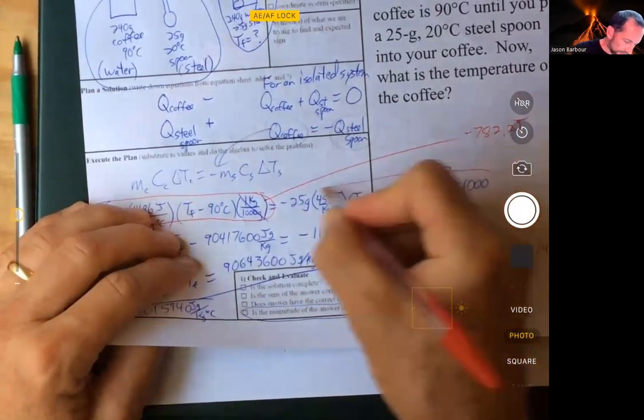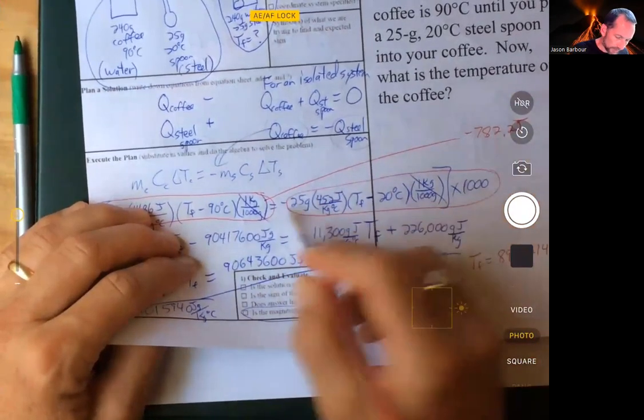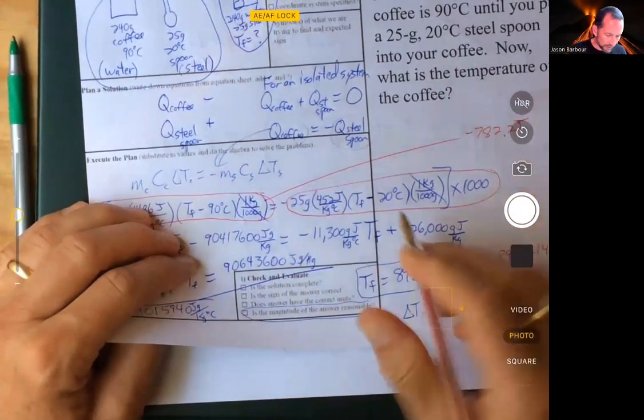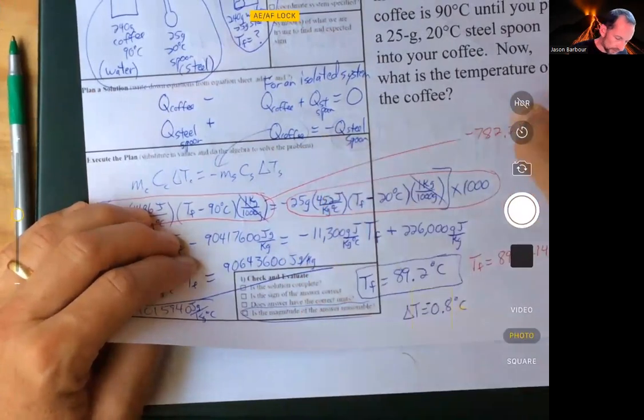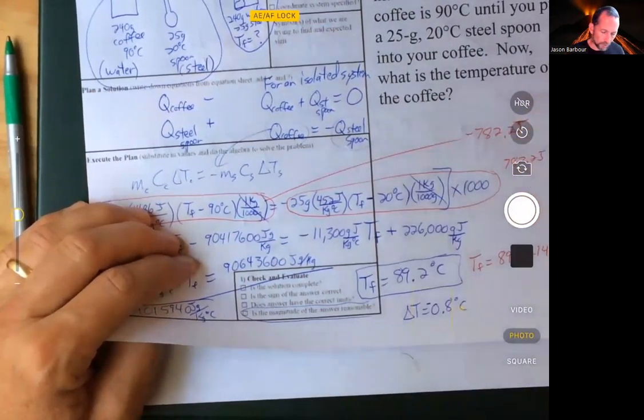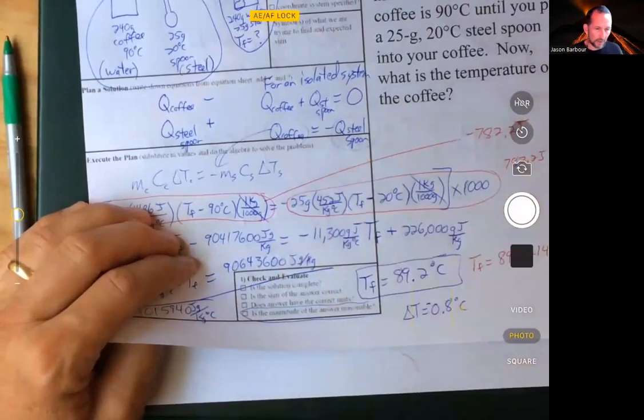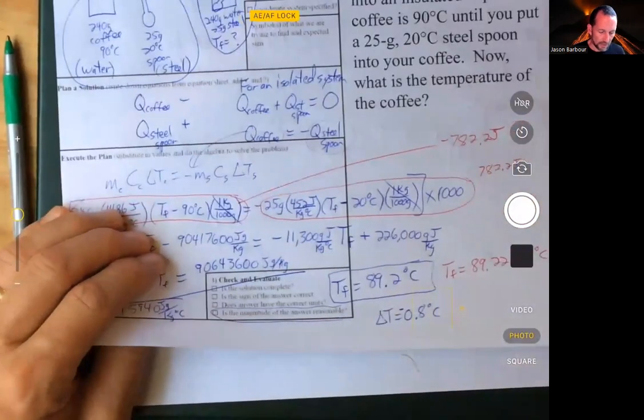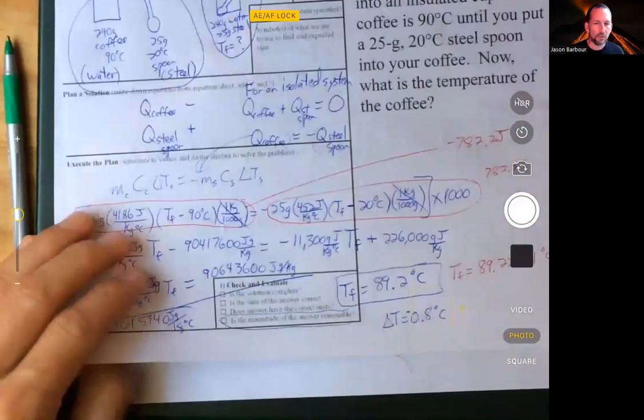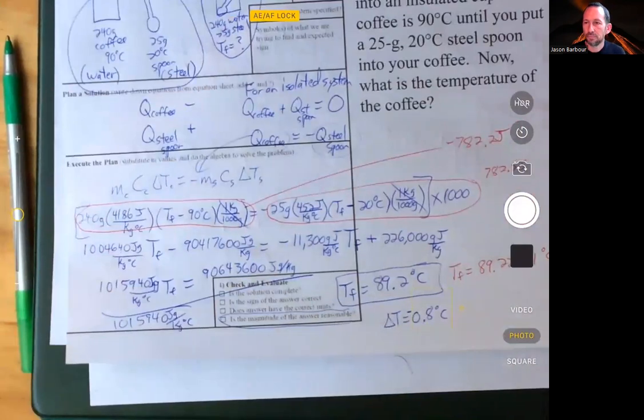And this side, without the minus sign, because that's the Q, the minus sign is extra, 782.2 joules. So it works out. And then you put the minus sign, and that's why that matches. Okay, so it really does work out.